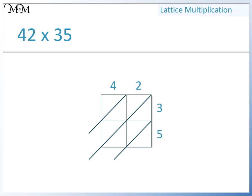We'll start by multiplying 4 by 3. We will write the answer in this square. 4 times 3 equals 12. We write the 2 here and the 1 here. Next, we multiply 2 by 3. We write the answer in this square. 2 times 3 equals 6. We write the 6 here and the 0 here, because there are no tens.